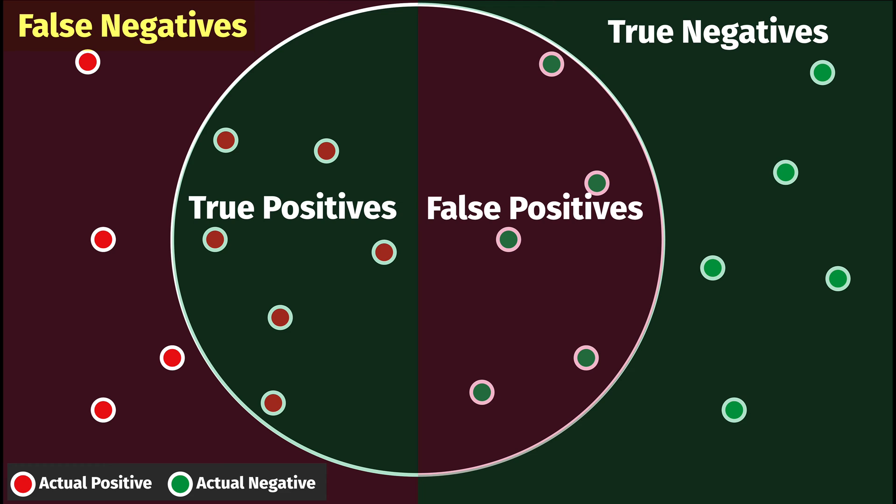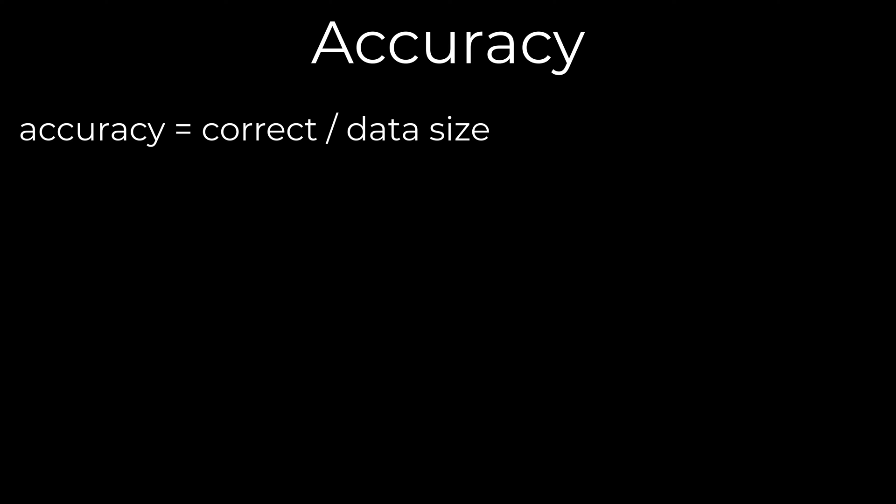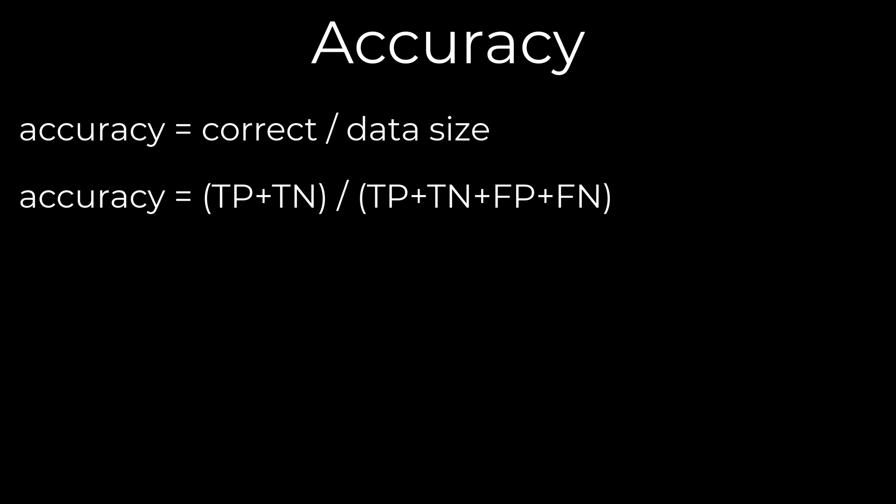How can we measure the performance of a binary classification model? There are several measures for this. Accuracy is one of the most common measures of model performance — the percentage of cases classified correctly. To calculate accuracy, take the number of correct model predictions divided by the data size. Correct model predictions are the sum of true positives and true negatives. The data size is the sum of true positives, true negatives, false positives, and false negatives.